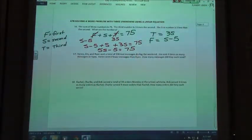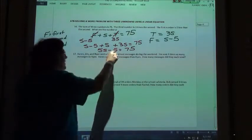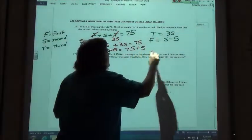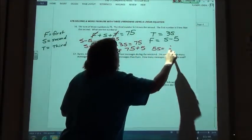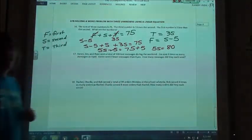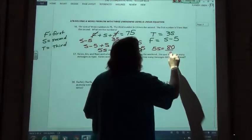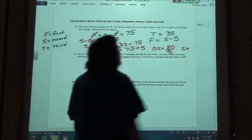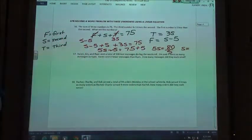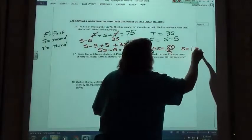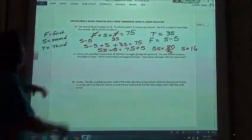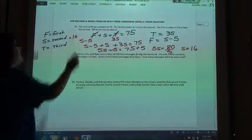Might as well put them all together at the same time, right? Solving that, then, I would add my five. So five S is going to equal 80, and if I take 80 and I divide it by five, I'm going to get 16, so the second one is 16.